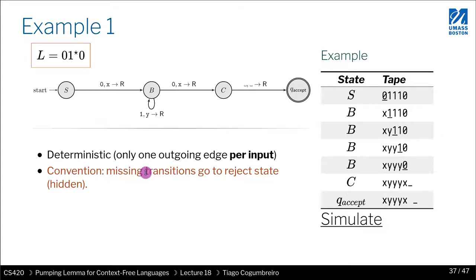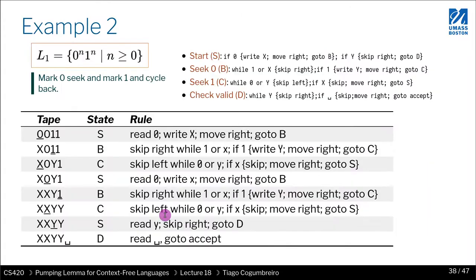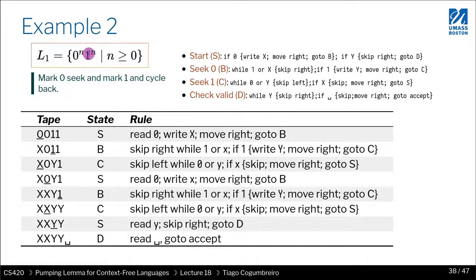Now let's look at Example 2, which is a bit more interesting. We want to accept 0^n 1^n — the classic non-regular language. How do we implement this? In a context-free grammar you need a stack to keep track of how many zeros you read, kind of like a counter — you push the same number of times and then pop. That allows you to match the same number of A's as B's. But here we no longer have a stack, so how would we do it?